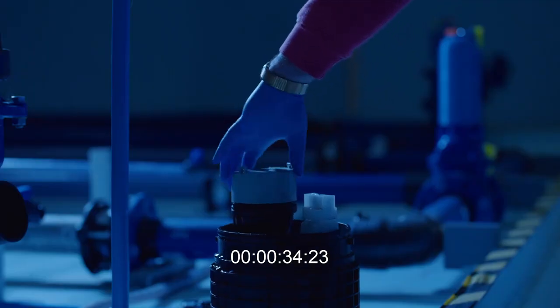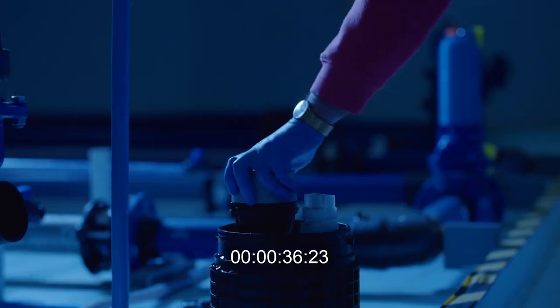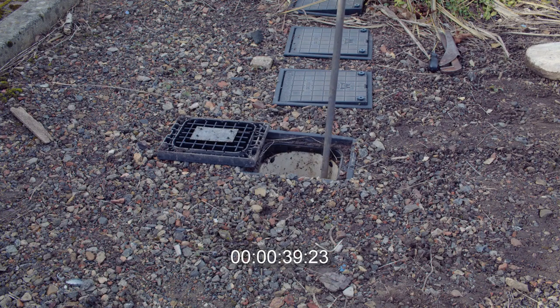Refit the non-return valve and water meter. Turn on the external water supply at the water meter chamber, allowing the AquaP to free swim to the leak, drawn by the flow of escaping water.